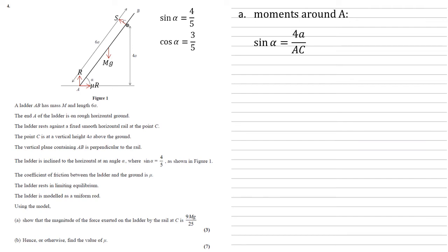So we can say that sin alpha must equal the opposite 4A over the hypotenuse which is AC which we're trying to find. We know that sin alpha equals 4 fifths so multiplying by AC dividing by our sin alpha of 4 fifths gives us that AC equals 4A divided by 4 fifths which is 5A.